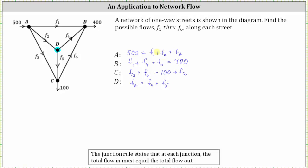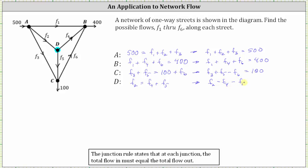For the next step, we'll write each equation in standard form, meaning all variable terms on the left and constants on the right. For the first equation, reversing the order gives us F sub one plus F sub two plus F sub three equals 500. The second equation is already in standard form. For the third equation, subtracting F sub six on both sides gives F sub three plus F sub five minus F sub six equals 100. For the fourth equation, subtracting F sub four and F sub five gives F sub two minus F sub four minus F sub five equals zero.